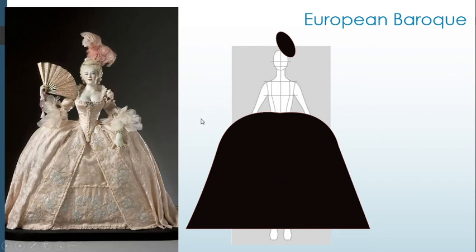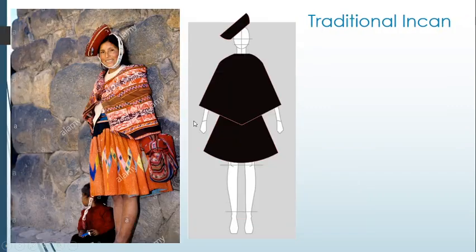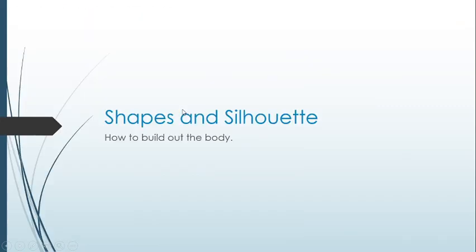Here we have a European Baroque dress where silhouettes went to the extreme, with a large bottom and large circular shapes on the hips brought down by a long trapezoid shape. We have a traditional Incan example with a very interesting silhouette changed by the headpiece and the diamond shapes from the wrap she has — using shapes and silhouette to build out the body.